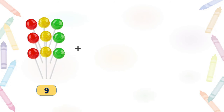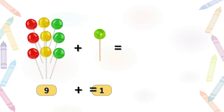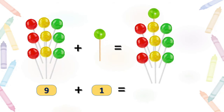Here is one more example. Here you can see 9 lollipops. We will add 1 more lollipop. So it became — count this — 9 plus 1, that is nothing but 10. Together they make 10 lollipops. I hope you understood that after 9 comes 10, or when we add 1 to 9, it gives us 10.